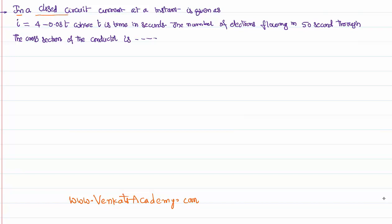In a closed circuit, current at an instant is given by i = 4 - 0.08t, where t is time in seconds. What is the number of electrons flowing in 50 seconds through the cross section of the conductor?